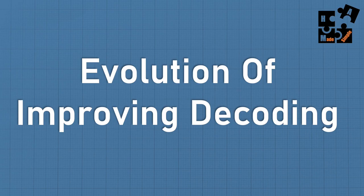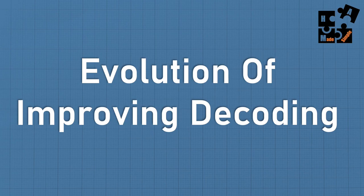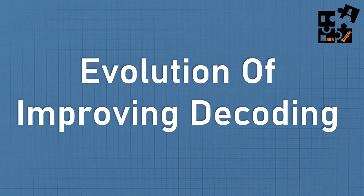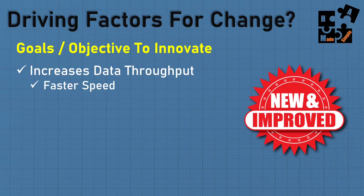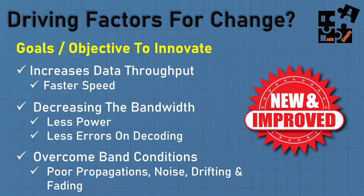Once you get your mind wrapped around the evolution of improving decoding and the differences in modulation, it'll make sense why there are so many variations of HF digital modes. Some older technologies are still used today but have seen improvements. The simple goals are: increasing data throughput (faster speed, more words per minute), decreasing bandwidth for less power and fewer errors — but it's all about band conditions. The innovation is: how do I punch through poor propagation, noise, drifting, and fading? That goal is what drives all these different variations.